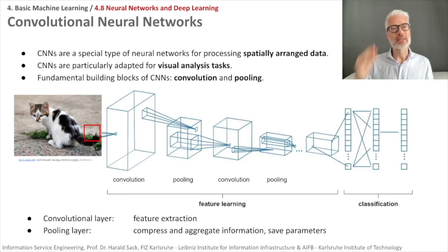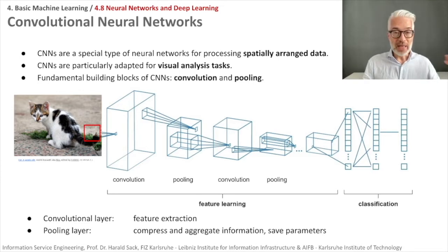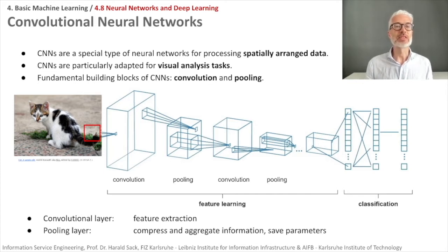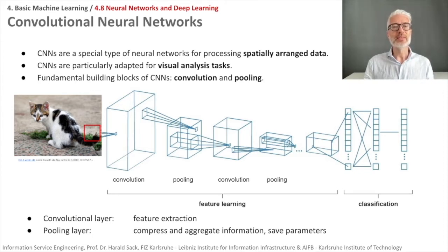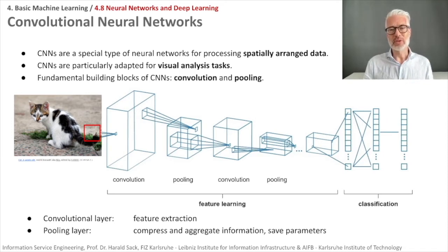But you can learn these features, and that was a great idea. These are the so-called Convolutional Neural Networks, CNNs — a special type of neural network for processing spatially arranged data like images, where pixels are arranged in a specific spatial order and pattern, a 2D matrix. They are very well adapted for visual analysis tasks. Nowadays they can also be applied to natural language processing and other tasks. They are based on two fundamental building blocks: convolutional layers and pooling layers.